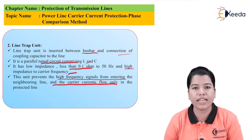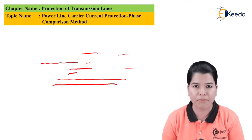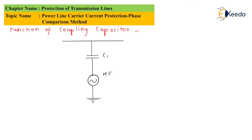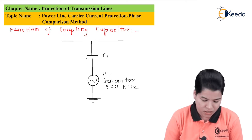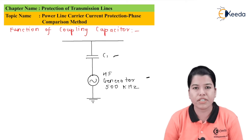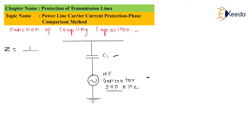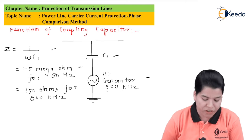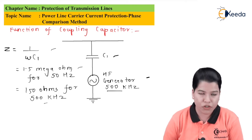The diagram shows the function of the coupling capacitor. C1 is the value of the coupling capacitor. This is the high frequency generator operating at 500 kilohertz. The impedance Z equals 1 divided by omega times C1, which gives 1.5 megaohms for 50 hertz and 150 ohms for 500 kilohertz.